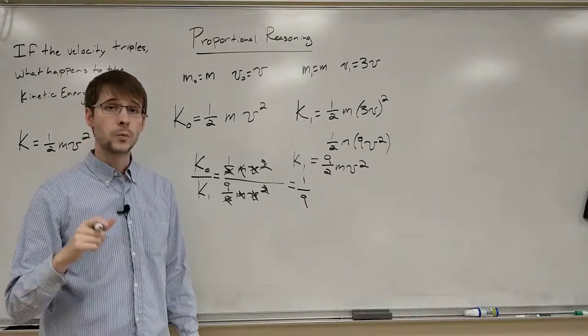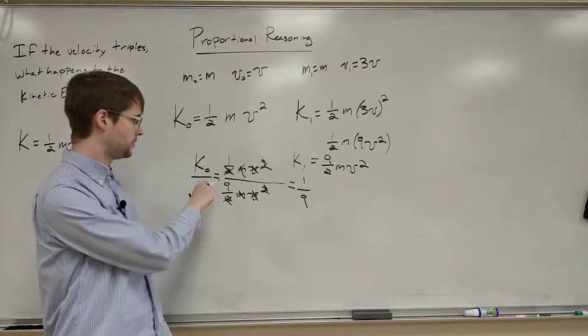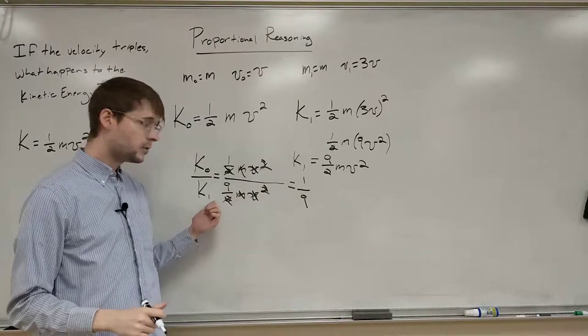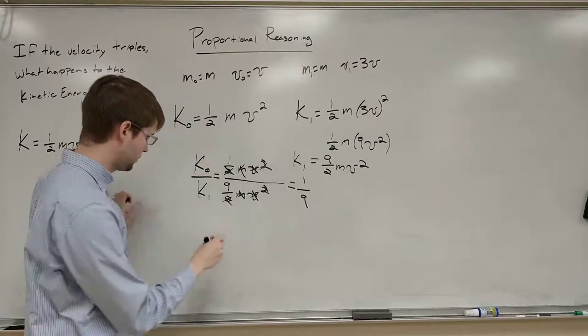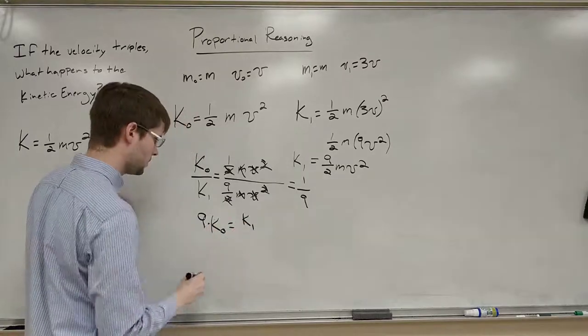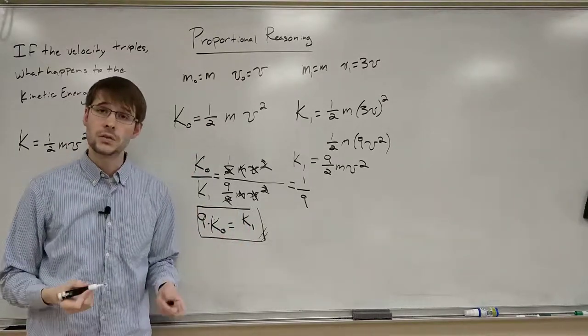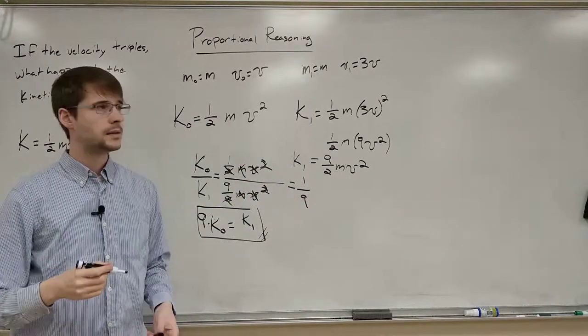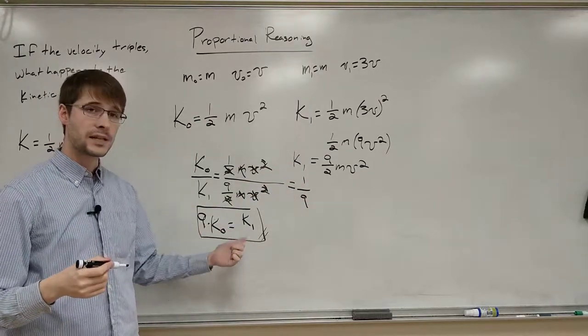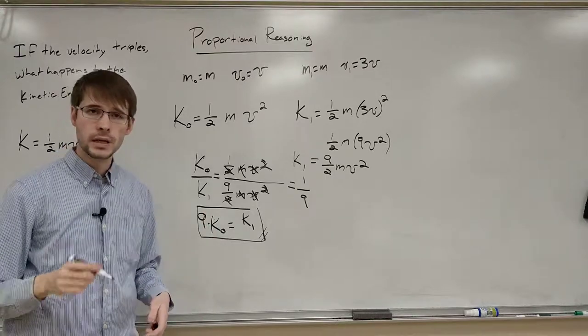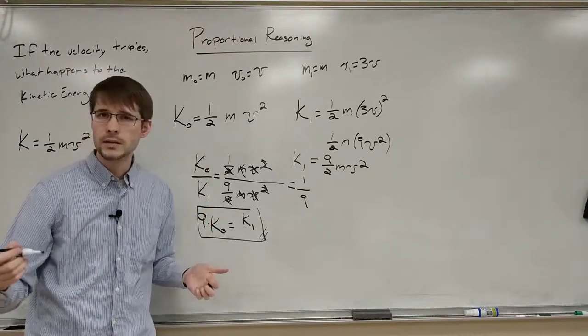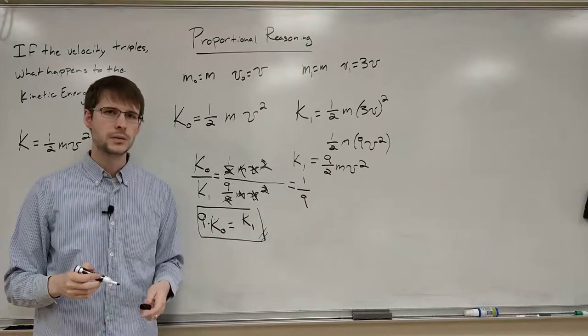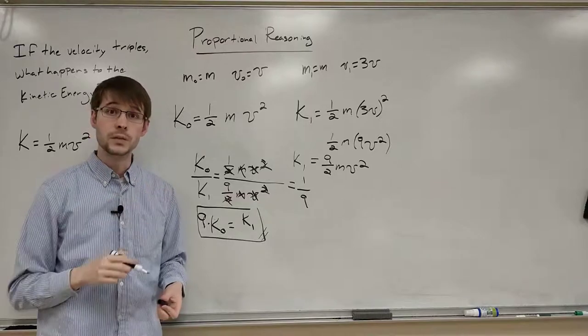And the question said, what's the final kinetic energy in terms of the original kinetic energy? And so let's rewrite this so that it's the final in terms of the other one. We're solving for k1. So what I did here is just cross multiply, get this k1 over here, the 9 on the top. And we get that the k1 is actually 9 times as large as k initial. That's what we said before. If you knew how to do it the other way, great, do it that way. But if you're having trouble with these kinds of questions, this is a great method to do it.